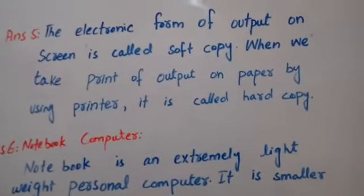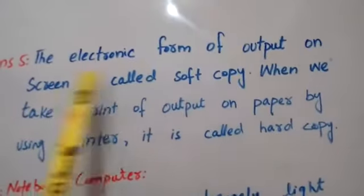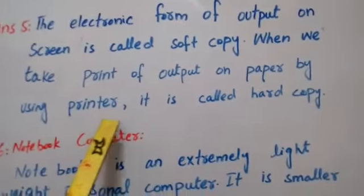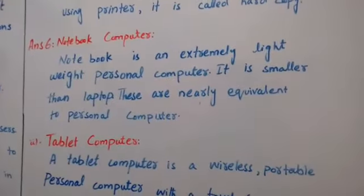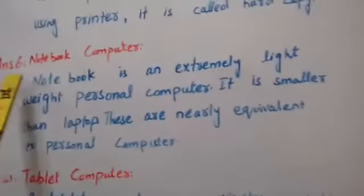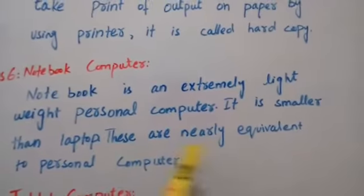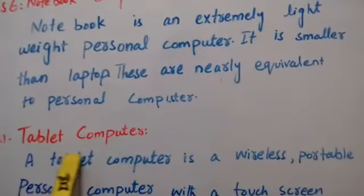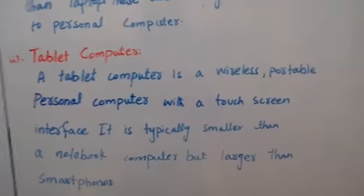Question number five: Differentiate between hard copy and soft copy. Answer: The electronic form of output on screen is called soft copy. When we take a print of output on paper by using a printer, it is called hard copy. Question number six: What is the difference between notebook computer and tablet? Answer: Notebook computer is an extremely lightweight personal computer, smaller than a laptop, and nearly equivalent to personal computers. Tablet computer is a wireless portable personal computer with a touch screen interface, typically smaller than a notebook but larger than smartphones.